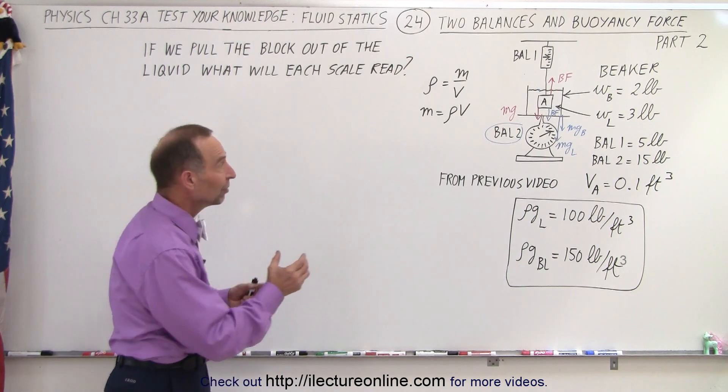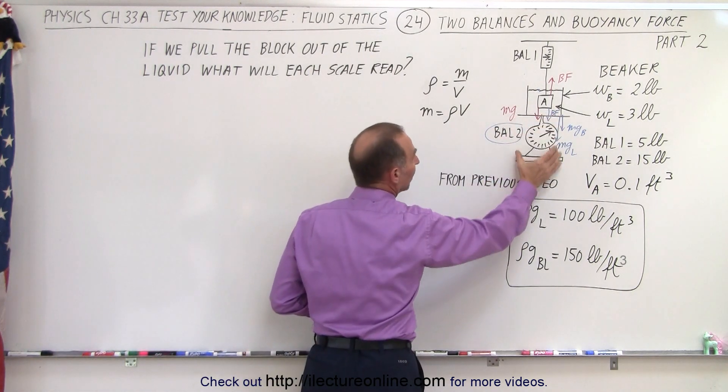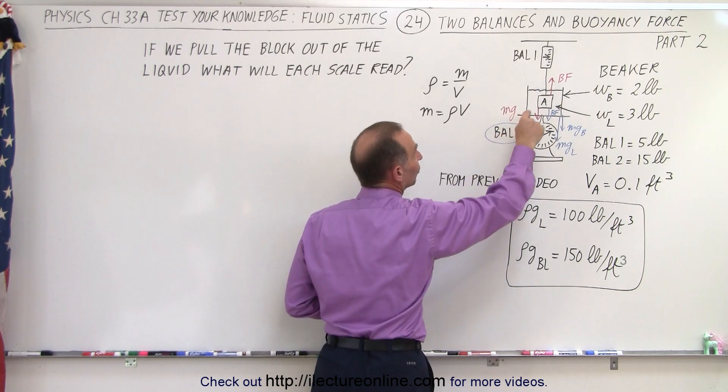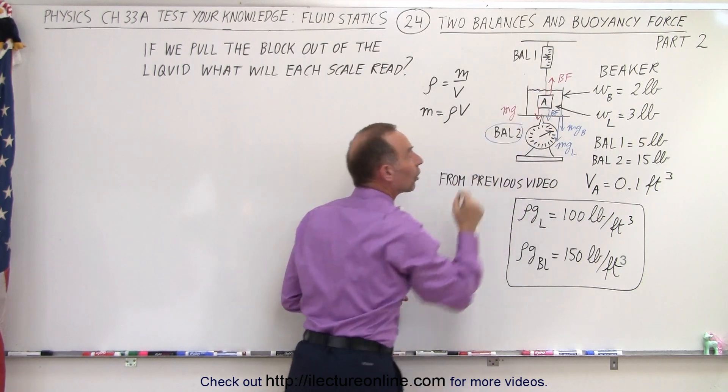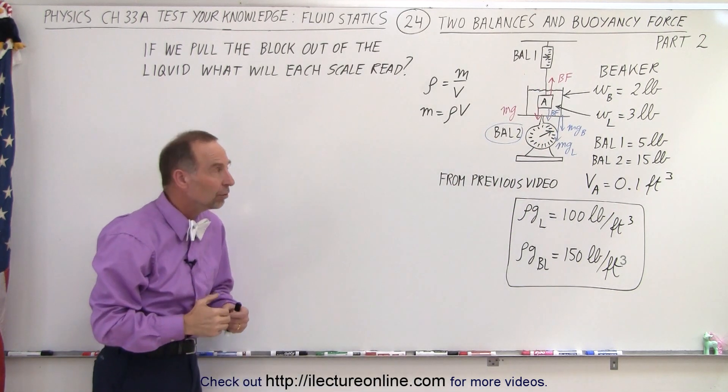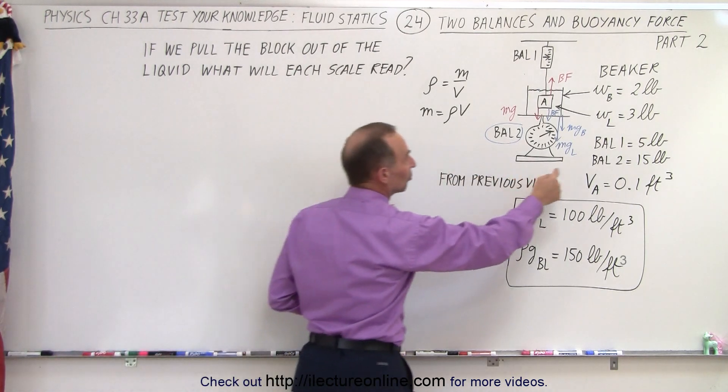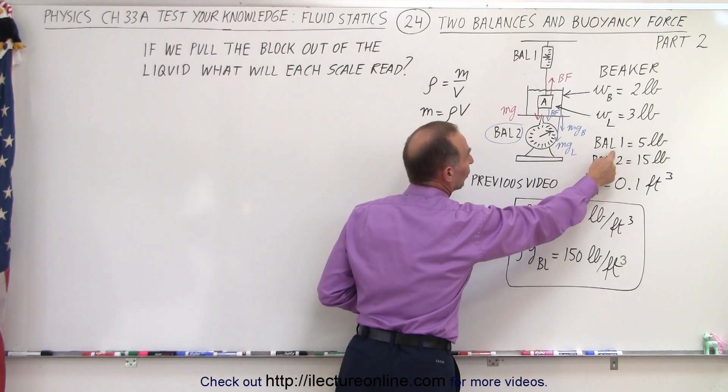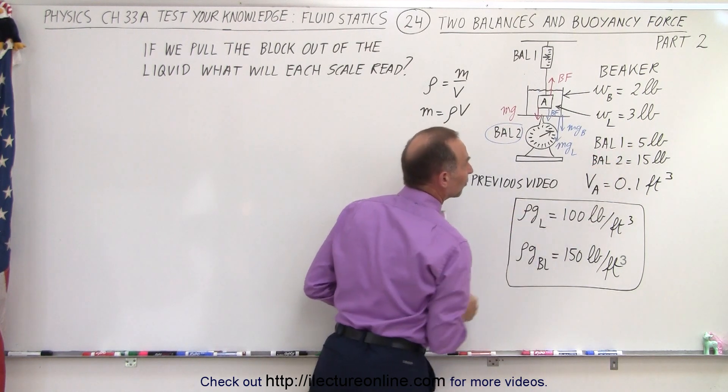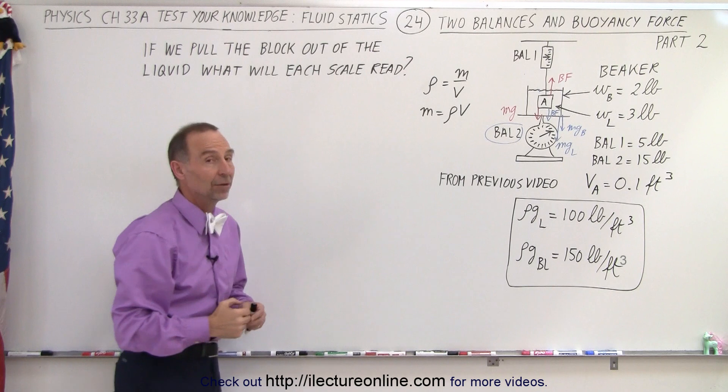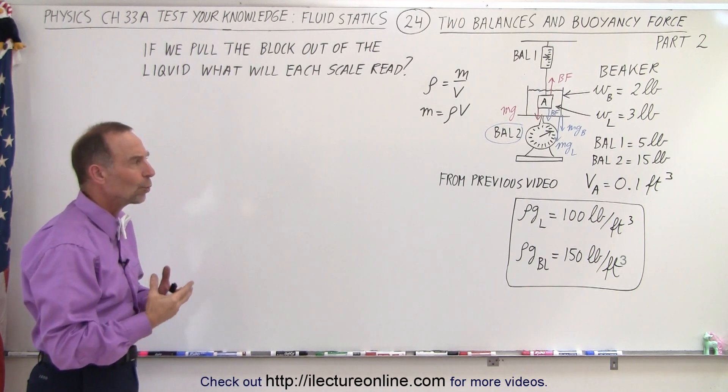But now what happens if we lower the bottom scale or raise the top scale so that the block is no longer suspended inside the liquid? Then what would each scale now read? Notice that in this situation the top scale balance 1 reads 5 pounds and the bottom scale reads 15 pounds. That's for a total of 20 pounds.